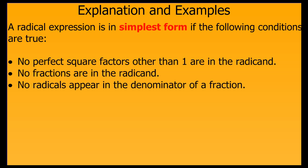A radical expression is considered to be in simplest form if the following conditions are true. First, it has no perfect square factors other than 1 in the radicand. Second, it can have no fractions at all in the radicand. And third, no radicals can appear in the denominator of a fraction.